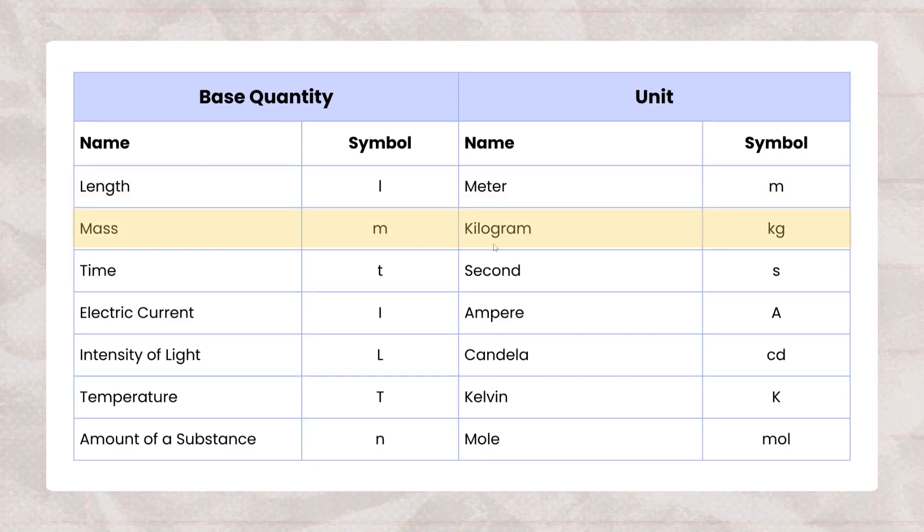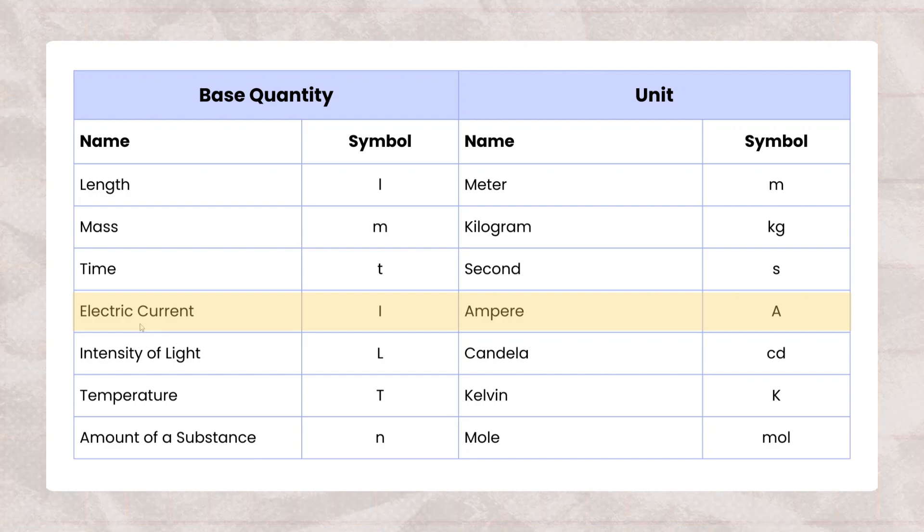Its unit is kilogram and it is denoted by small kg. Third is time, its symbol is small t. Its unit is second and it is denoted by small s. Number 4 is electric current.